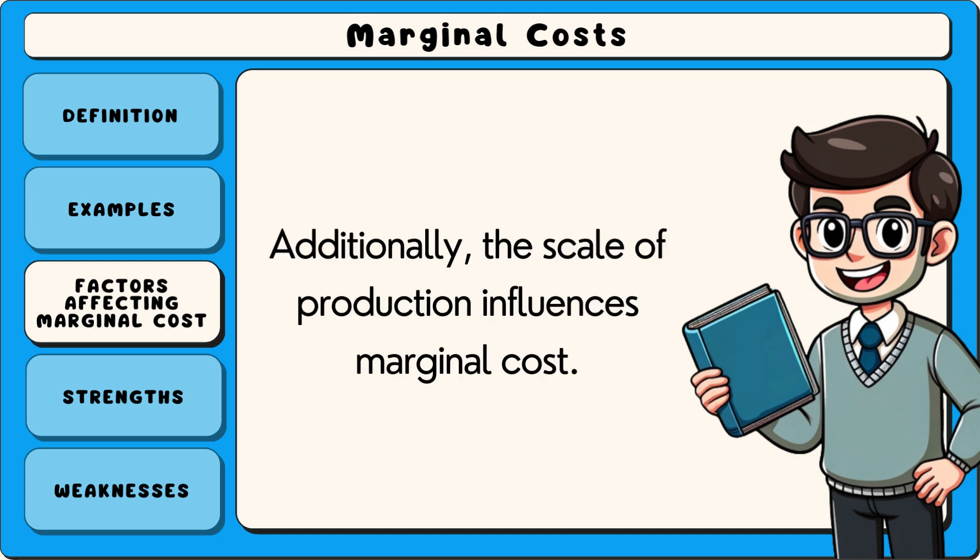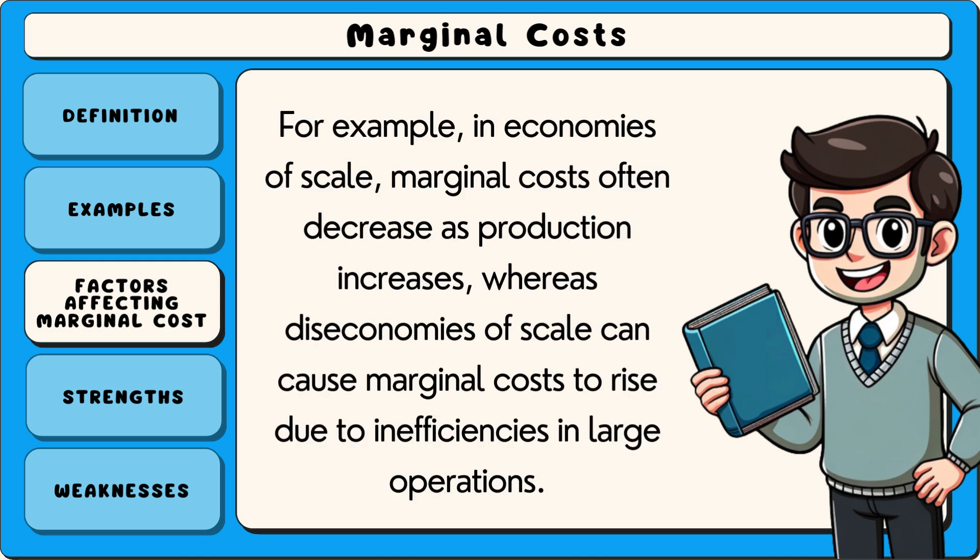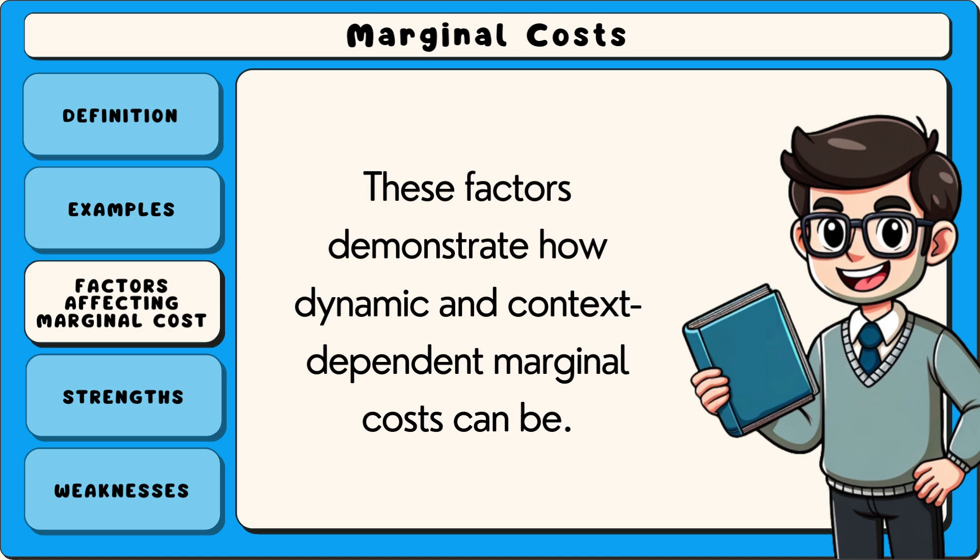Additionally, the scale of production influences marginal cost. For example, in economies of scale, marginal costs often decrease as production increases, whereas diseconomies of scale can cause marginal costs to rise due to inefficiencies in large operations. These factors demonstrate how dynamic and context-dependent marginal costs can be.